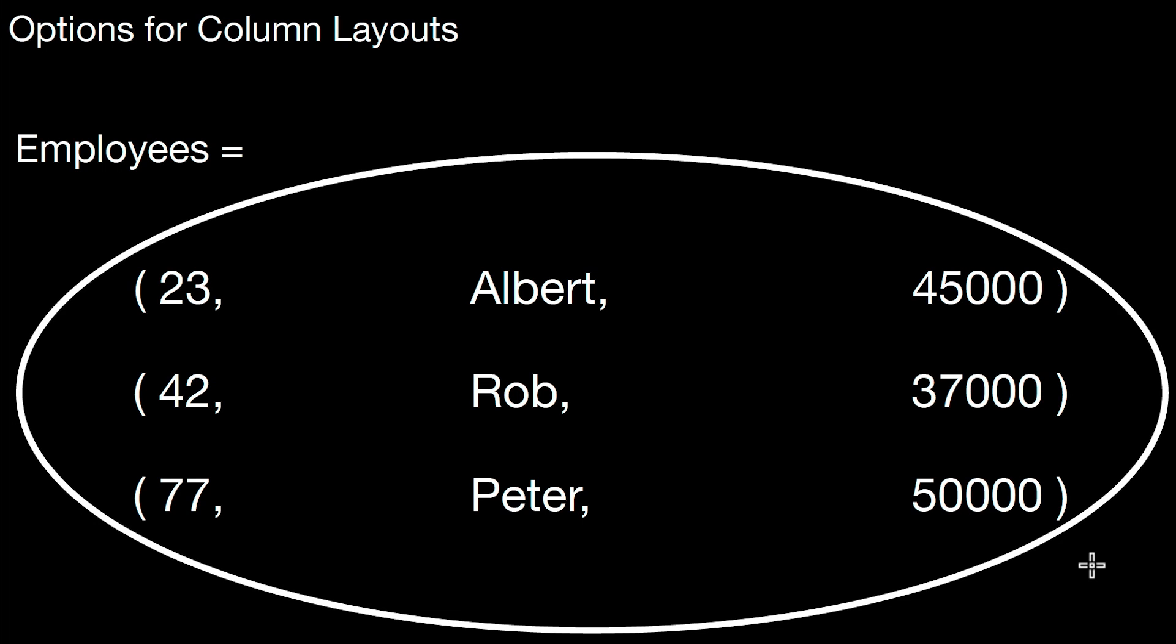So we already learned about two different linearizations for relations. One was a row layout and the other was a column layout. In this video we look at some more options for column layouts.